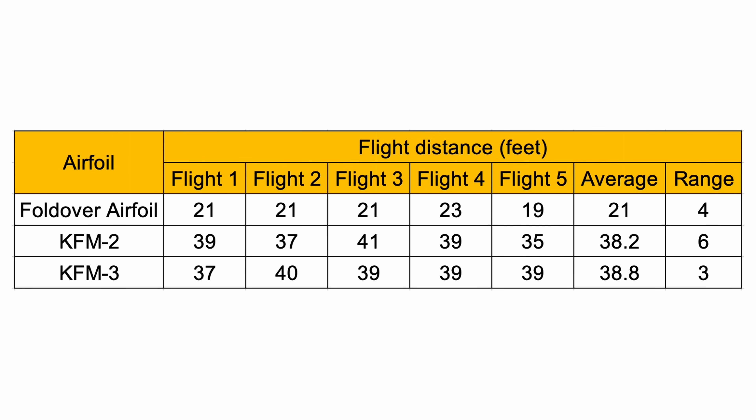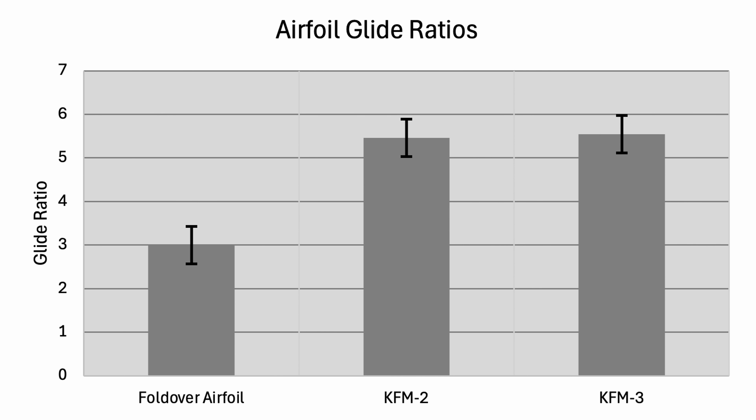The full data set of all 15 flights across all three airfoils is shown here. This chart shows the glide ratio of each airfoil — how many units the plane travels horizontally for every one unit it travels vertically. The error bars represent a distance of six feet, the greatest range observed, non-dimensionalized by the seven-foot launch height. The KFM2 airfoil had a glide ratio about 82% greater than the fold-over airfoil, and the KFM3 airfoil had a glide ratio about 85% greater.